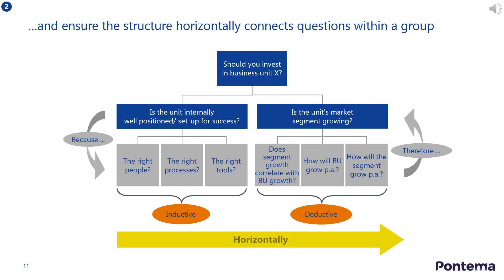In contrast, deductive reasoning is a top-down approach whereby conclusions are based on themes that are generally assumed to be true. For example, from the slide, if business unit X's sales volume correlates with growth in the segment and both the business segment and business unit X are forecast to grow, then we can conclude that the unit's market segment is growing. This approach is mainly used to structure communication to audiences that need to be convinced.